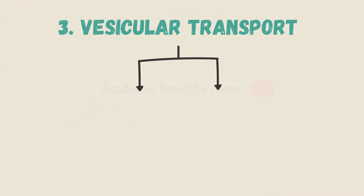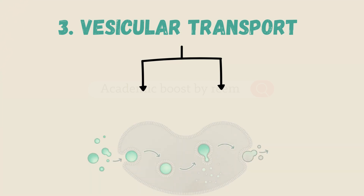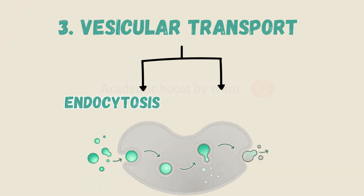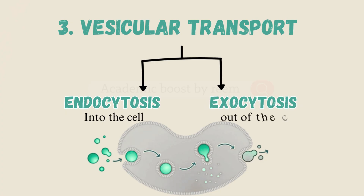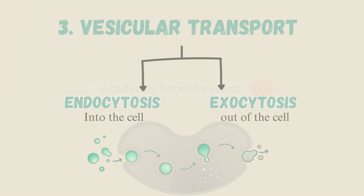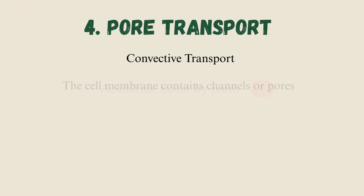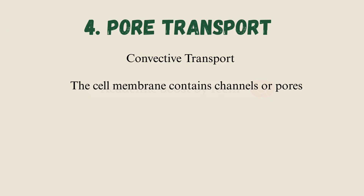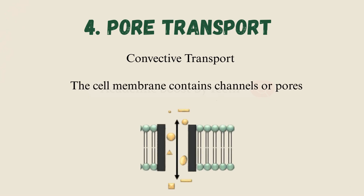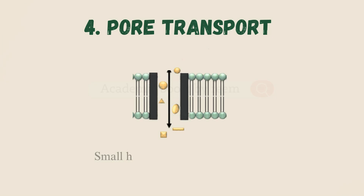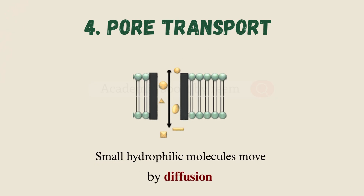A further classification is based on direction: endocytosis moves material into the cell and exocytosis moves it out. Number four is pore transport, also known as convective transport, where the cell membrane contains channels or pores through which only small hydrophilic molecules move by diffusion.